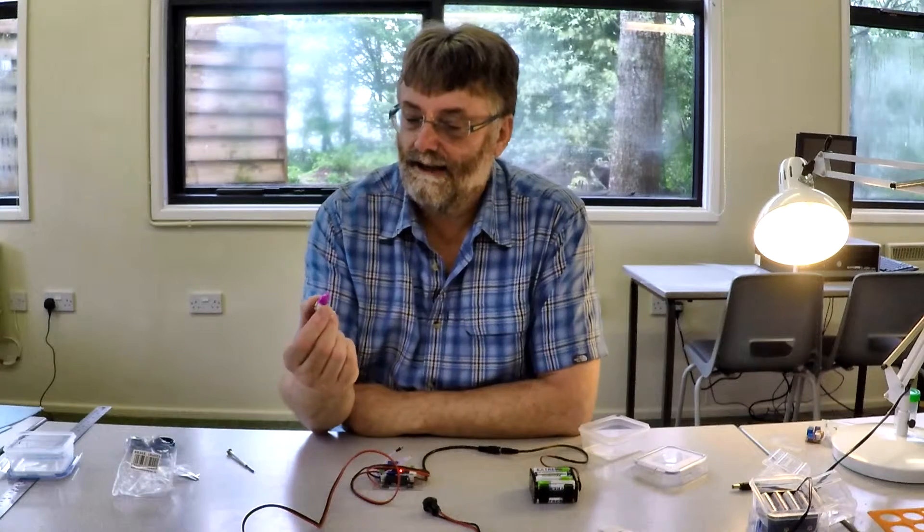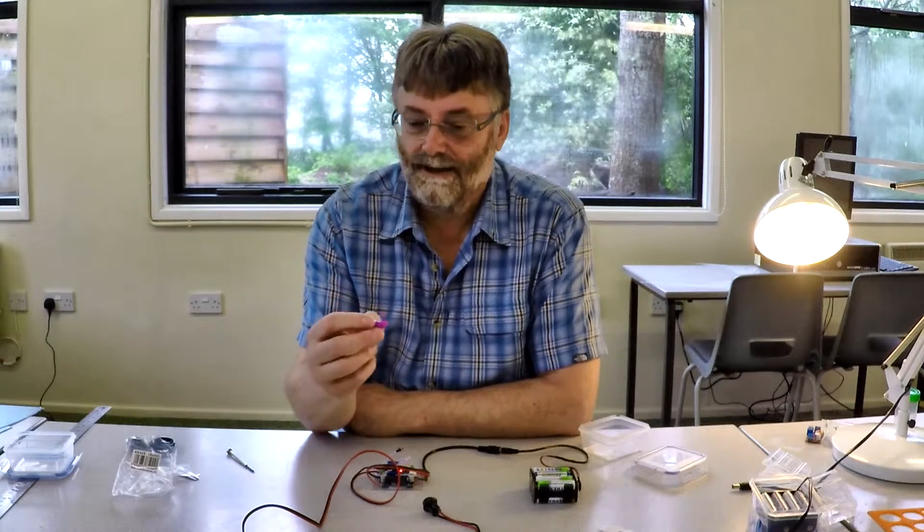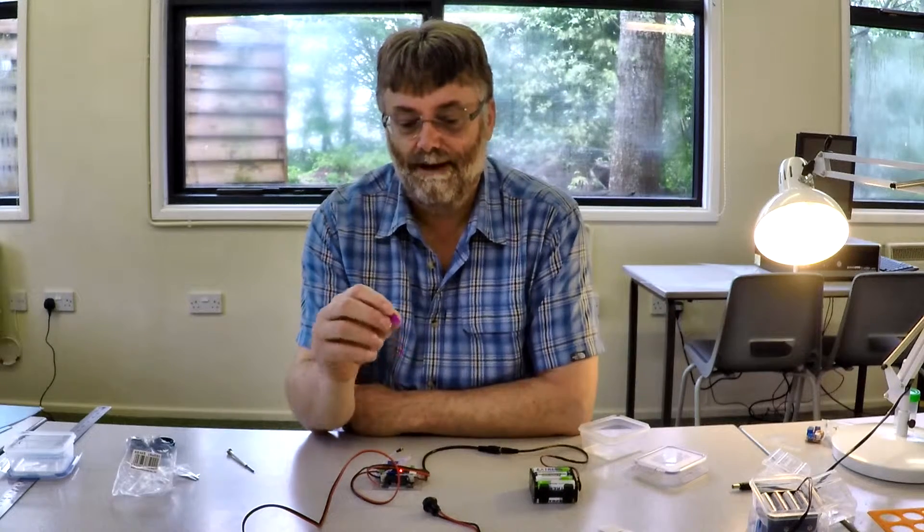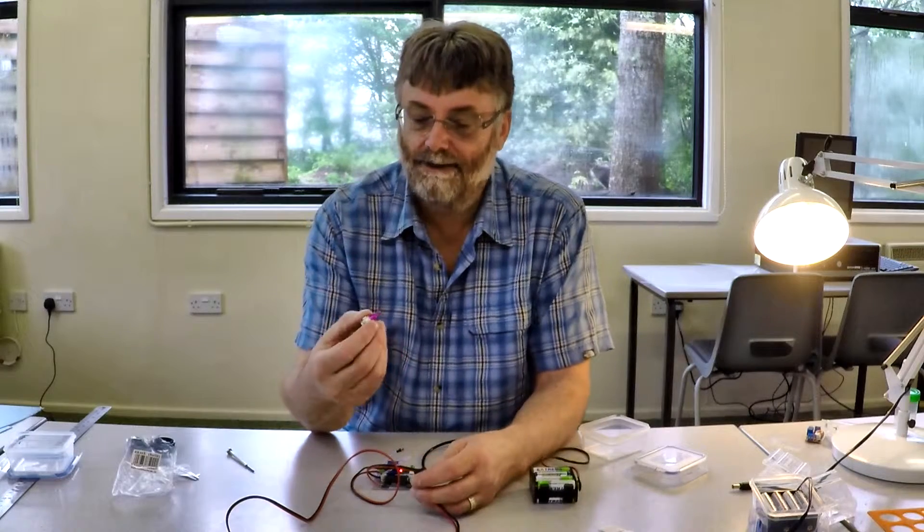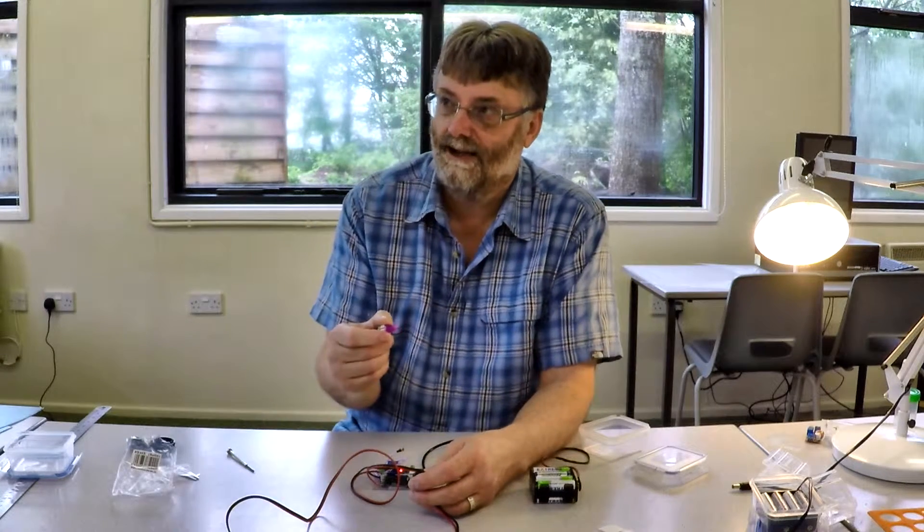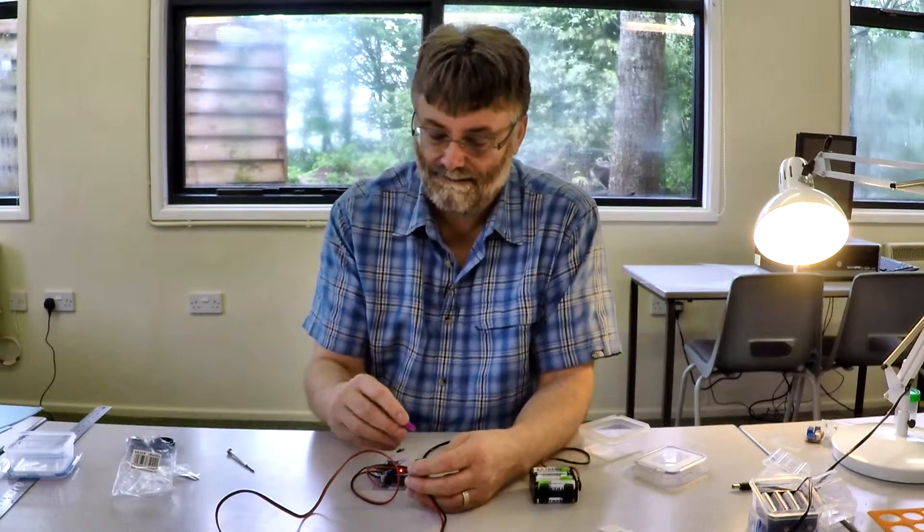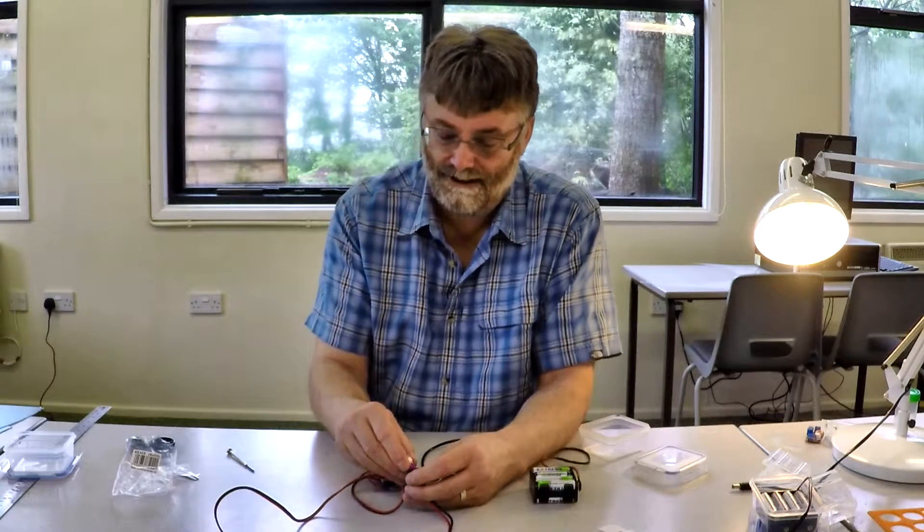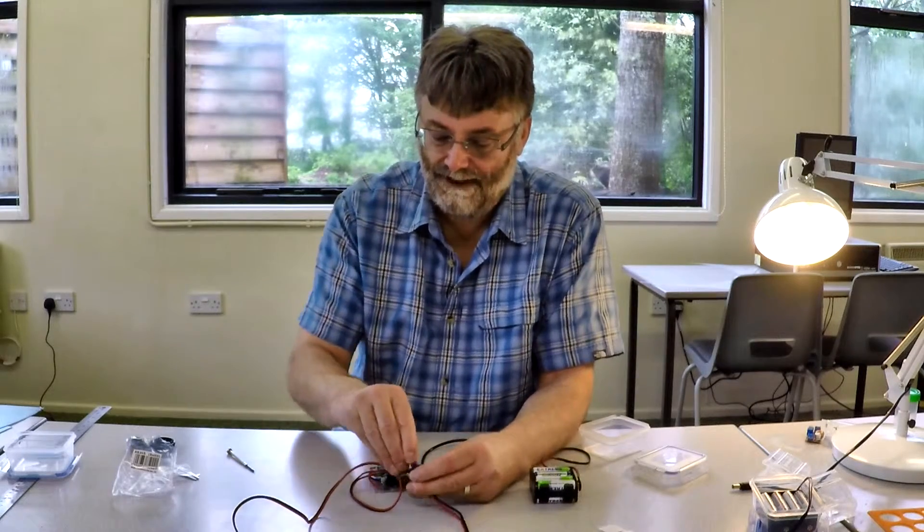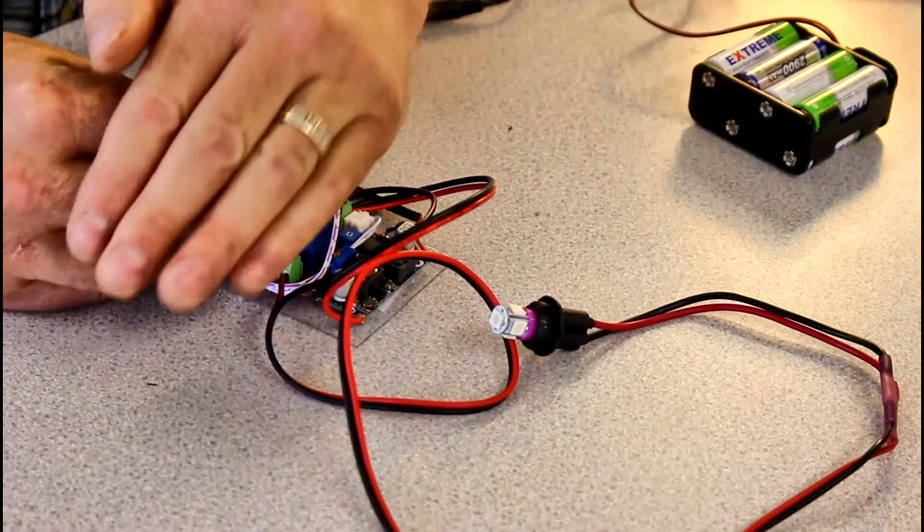Now the bulbs have a right and a wrong way. So they're not like ordinary bulbs. They have to go in the right way round. And there is no marking on the outside to tell you which way round they go. So you've got to carefully insert them in the socket. And if they don't work, you put them in the other way.